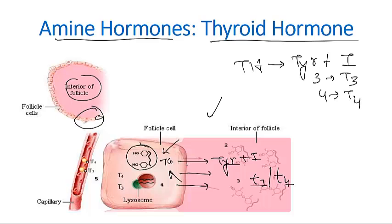Almost three months' worth of thyroid hormone can be stored inside the follicle. Upon secretion, an enzyme cleaves the thyroid hormone from the thyroglobulin, activating it. Because thyroid hormone is not water soluble, it must bind to a plasma protein to be transported through the blood — it cannot travel on its own and needs carrier proteins.